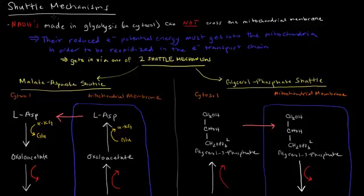In the last video, I mentioned shuttle mechanisms as the reasons why NADHs that are made in glycolysis could be valued at 1.5 or 2.5 ATP.